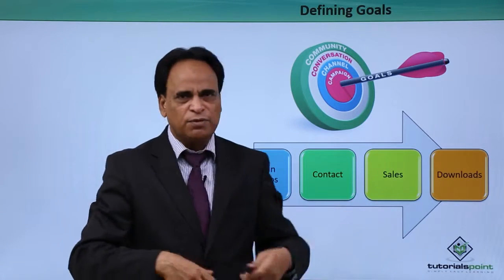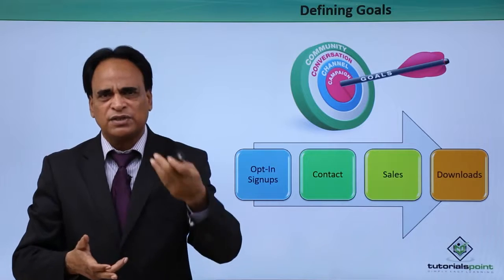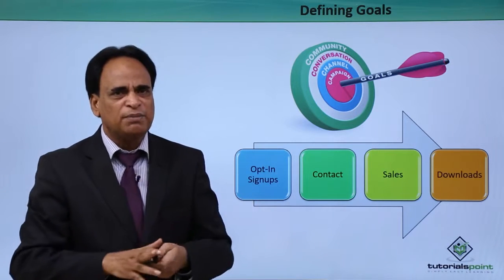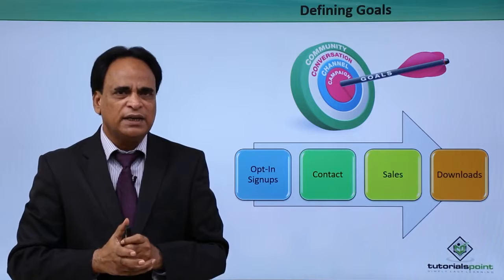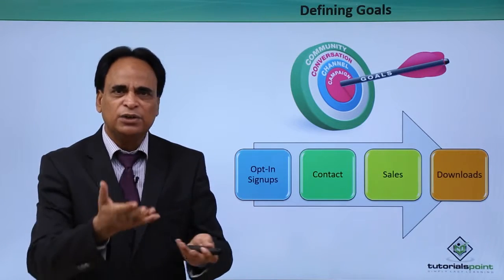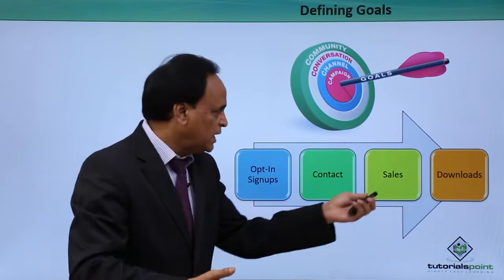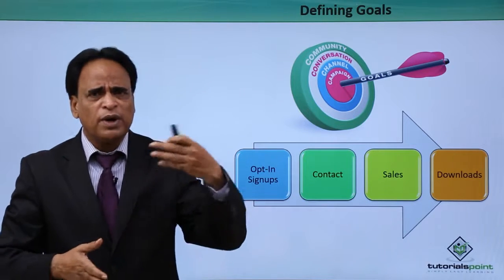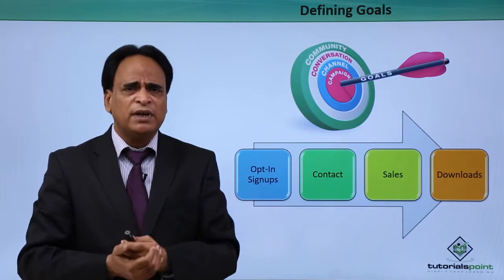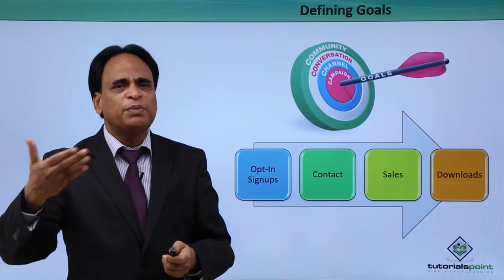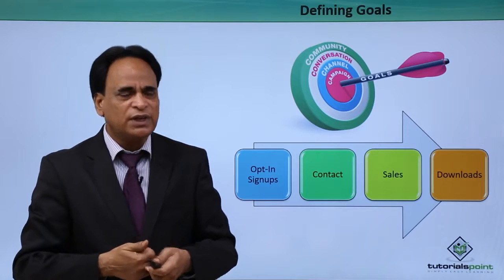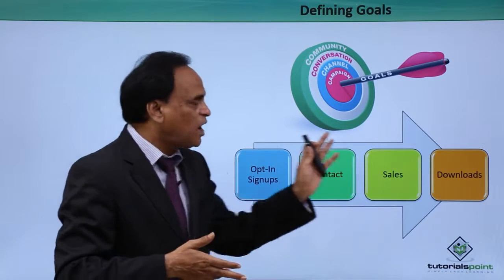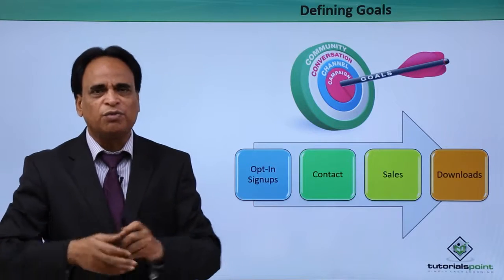Then sales, of course — you have an e-commerce site and you want to sell some products. You drive traffic from social media, people go and buy there. That is converting a lead into a customer. It can also be possible that you are providing information where you want people to download that information — that could be downloads. So these are basically how you can define your goals.